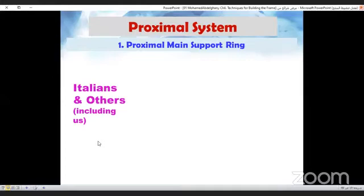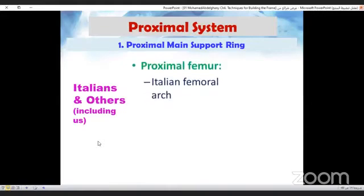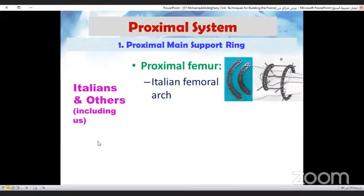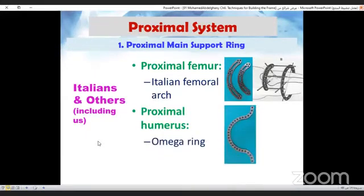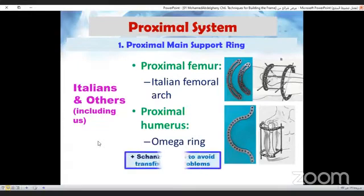Catania and Catania added their modification for more safe fixation. They used the Italian femoral arch for the proximal femur and the omega ring for the proximal humerus. They fixed both with Schanz screws. That means they used fixation instead of transfixation.